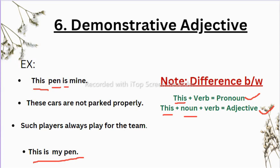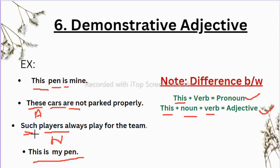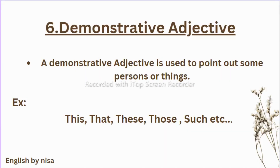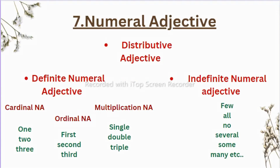These cars are not parked properly — 'these' is followed by the noun 'cars' then the verb 'are,' so this is a demonstrative adjective. Such players always play — 'players' is the noun after 'such,' and 'play' is the verb, confirming it as a demonstrative adjective. So demonstrative adjectives are used to point out specific persons or things.